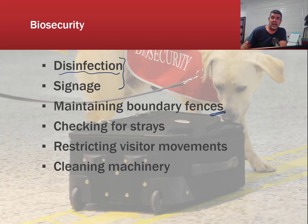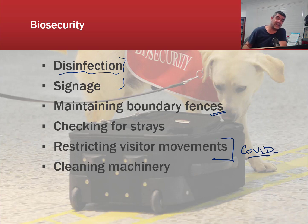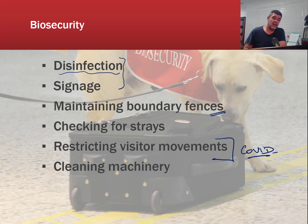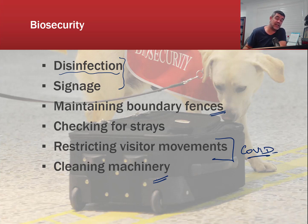Biosecurity also involves checking for strays and restricting visitor movements. We've done this on a massive scale with COVID — not a disease that affected our livestock, but something that showed exactly the impact of restricting visitor movements. By having shutdowns and isolations, this country did a pretty good job at keeping the incidence of COVID at very low levels compared to many other countries. The cleaning of machinery and ensuring that anything in contact with potentially infected individuals gets thoroughly disinfected and cleaned is another key measure.